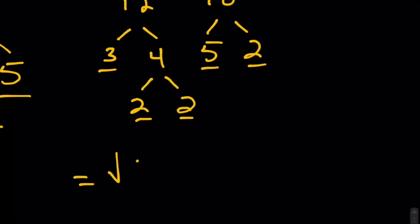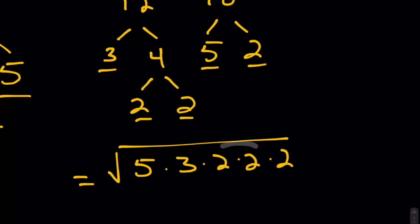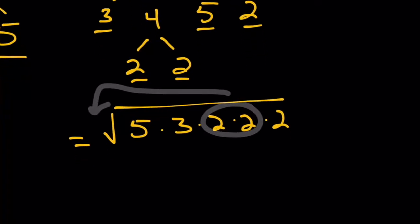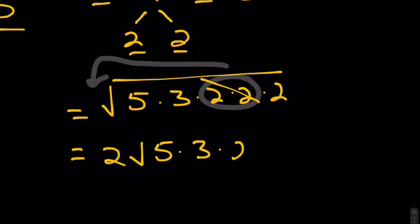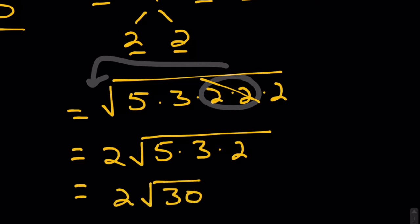Now let's rewrite the radical. This time we're going to write 5 times 3 times 2 times 2 times 2. Notice how I did this in descending order — you don't have to, I just like to do that. We do have a single pair of 2s, so we are going to put one representative from that pair outside of the radical to get 2. On the inside, we are left with 5 times 3 times 2, so we may as well just write it as 2 times the square root of 30. And this, my friends, is our final answer.